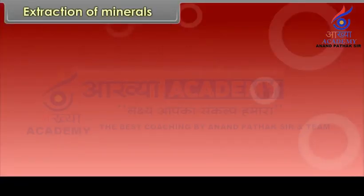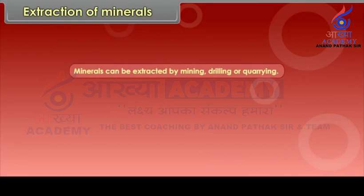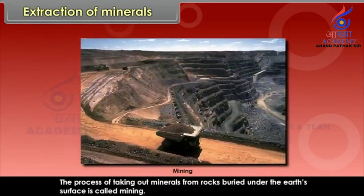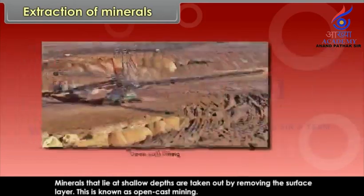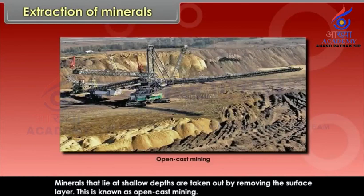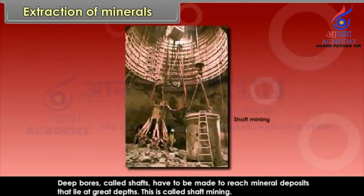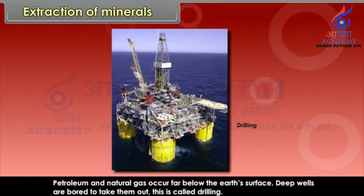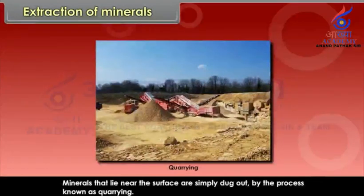Extraction of minerals. Minerals can be extracted by mining, drilling or quarrying. The process of taking out minerals from rocks buried under the earth's surface is called mining. Minerals that lie at shallow depths are taken out by removing the surface layer — this is known as open cast mining. Deep bores called shafts have to be made to reach mineral deposits that lie at great depths — this is called shaft mining. Petroleum and natural gas occur far below the earth's surface; deep wells are bored to take them out — this is called drilling. Minerals that lie near the surface are simply dug out by the process known as quarrying.